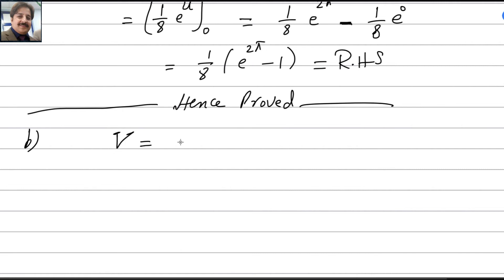Volume for one rotation equals π times the integral from 0 to π/2 of y squared dx. The curve shown has equation y equals 6e to the power (4x plus 2sin2x) cos x.